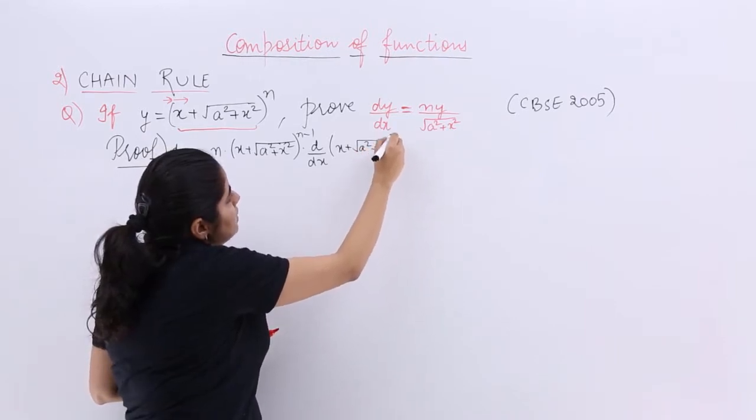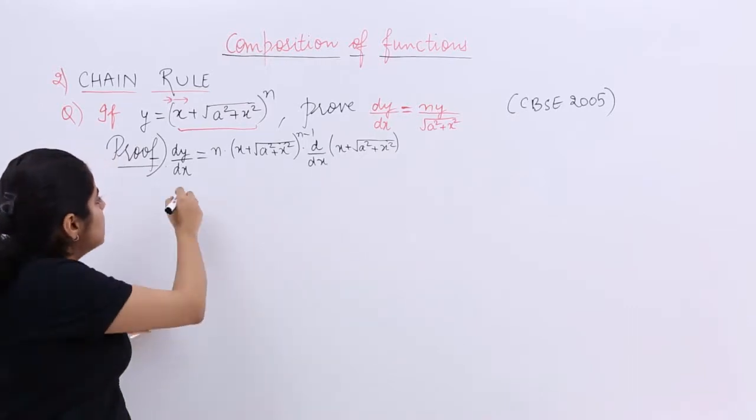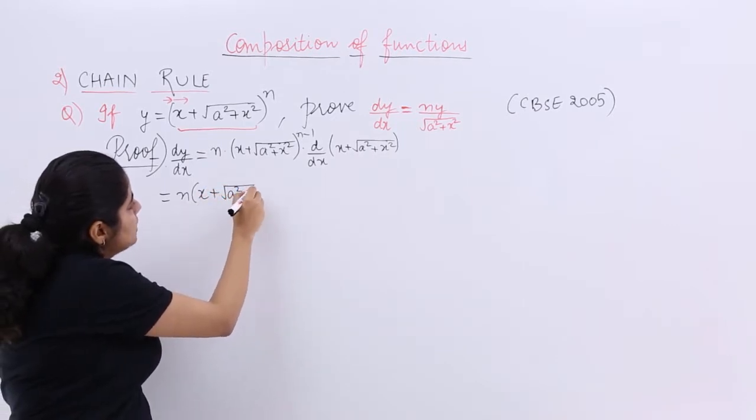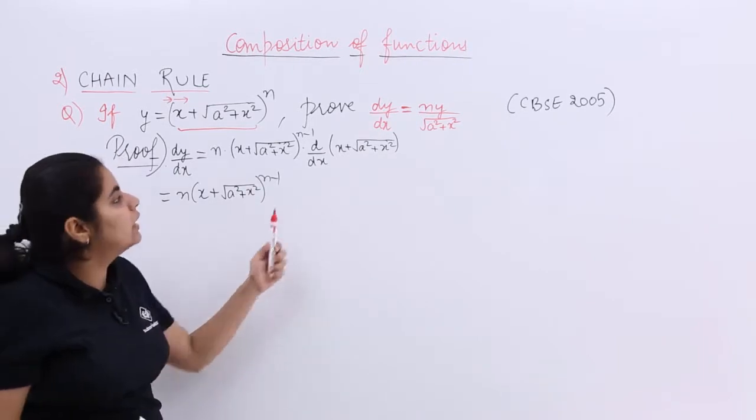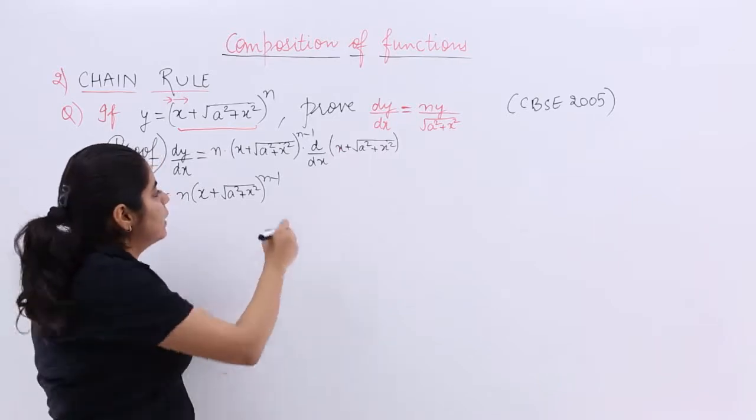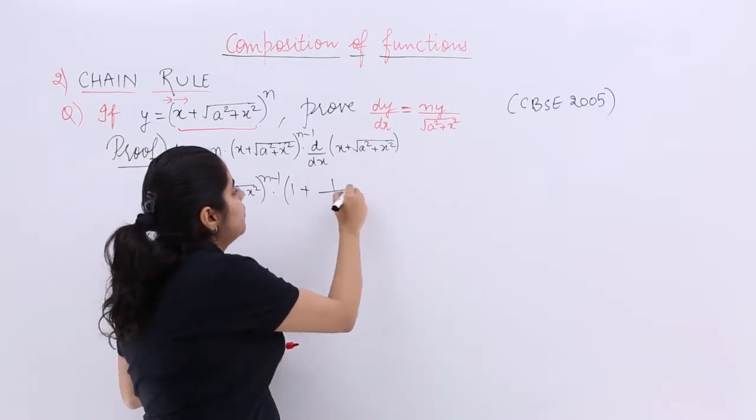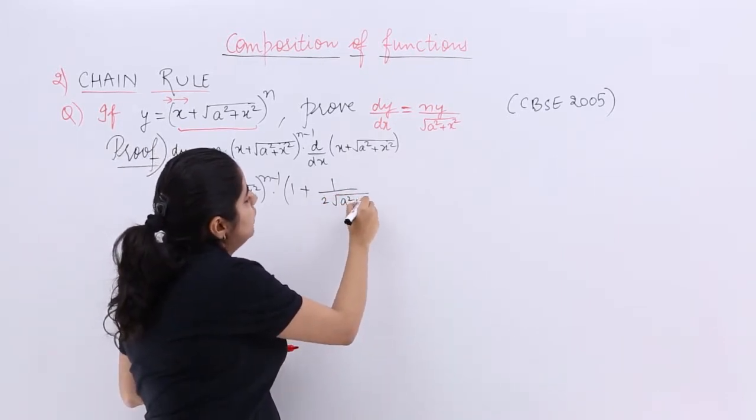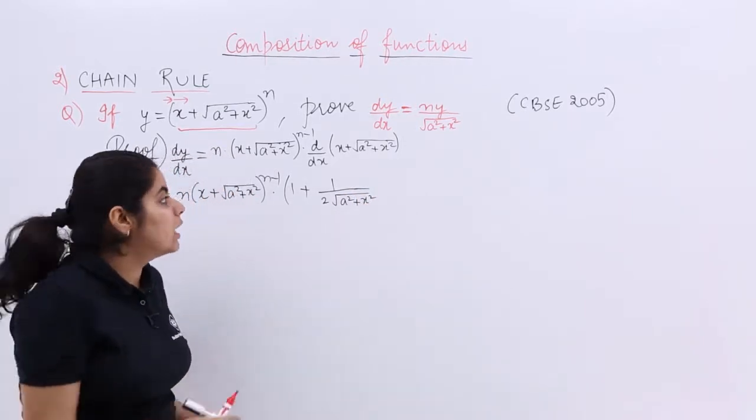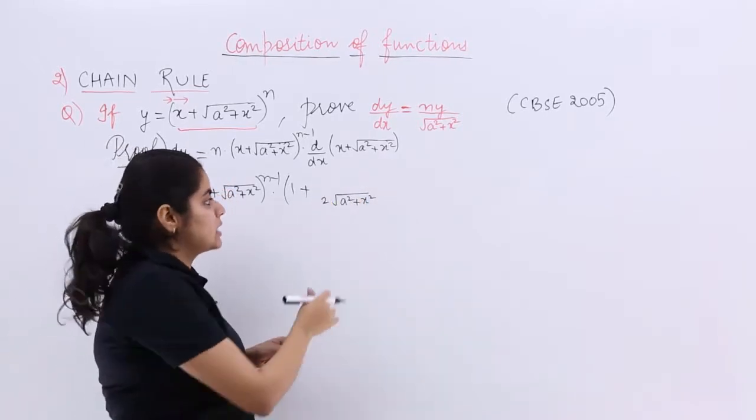And we had done this type of question, the first question was actually of this type only based on chain rule, so this is not difficult for us. Let's now continue, it is nx plus root a square plus x square raised to the power n-1, d by dx of this thing. This thing is also not difficult for us. x is nothing but what? Having the differentiation of 1 plus, this is having the differentiation of 1 by 2 under root of this whole thing copied as it is.